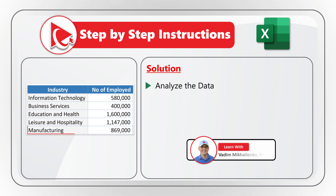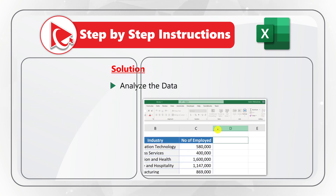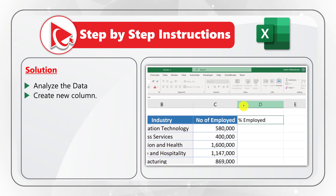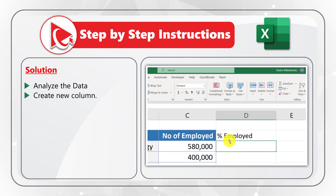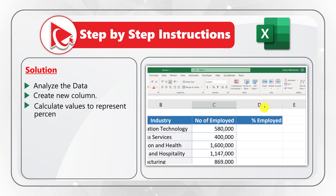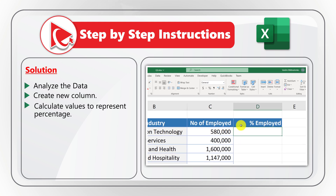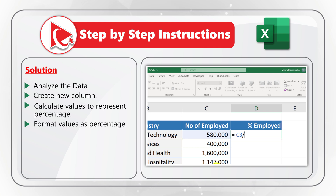To calculate the percentage of employed people using advanced conditional formatting with data bars, create a new column and format the title to match the other titles. Then calculate the values representing percentage of employed people, computing the total using the SUM formula. Next, format the values as a percentage using the percentage data type.